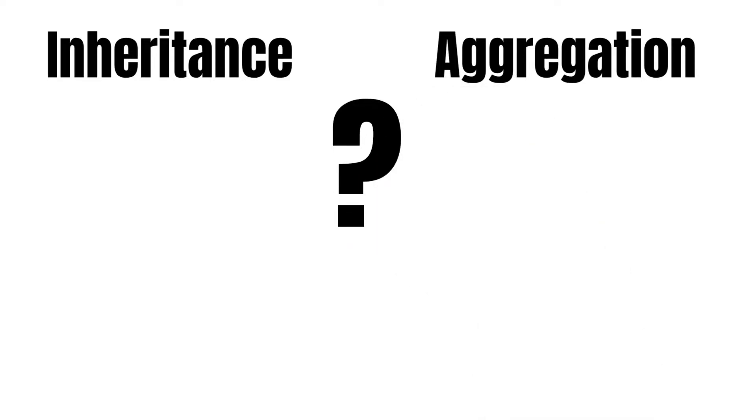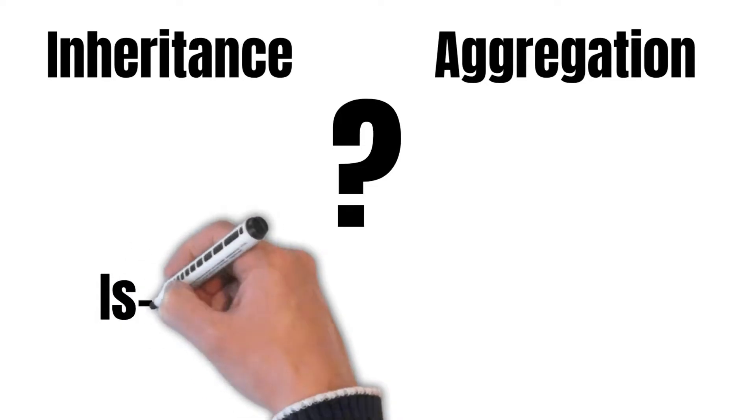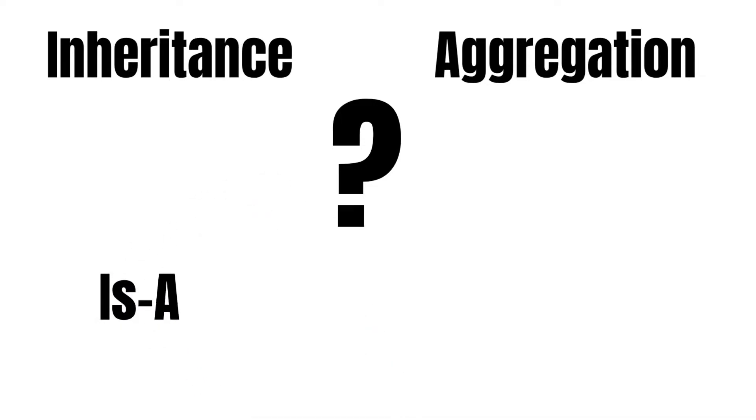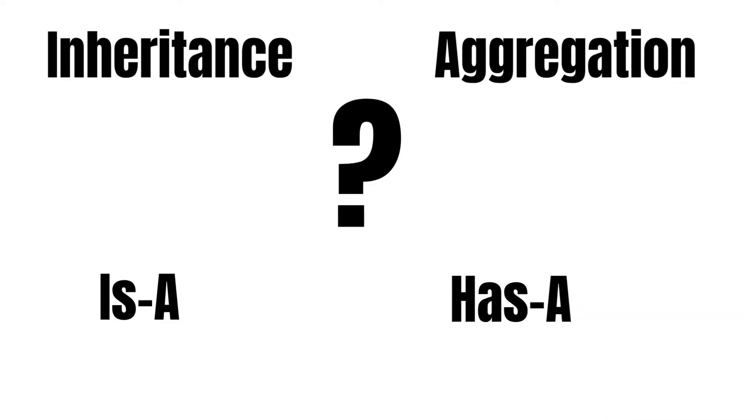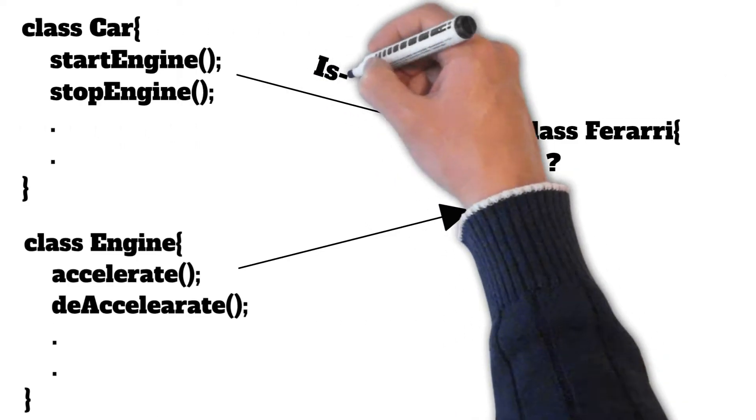The answer to this question is: whenever we have an 'is-a' relationship, we should use inheritance, and whenever we have a 'has-a' relationship, we should use aggregation.